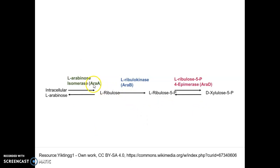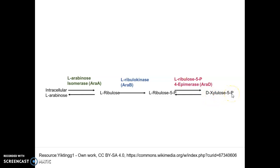The enzymes transcribed and translated from the araBAD structural genes and their functions are as follows. L-arabinose isomerase isomerizes L-arabinose into L-ribulose, converting an aldose to a ketose. L-ribulose is then phosphorylated by ribulokinase to L-ribulose-5-phosphate, which gets epimerized at the fourth position to xylulose-5-phosphate. This xylulose-5-phosphate is channeled into the pentose phosphate pathway, ultimately leading to hexose sugars utilized by the bacteria.